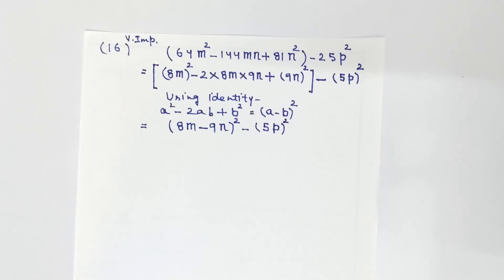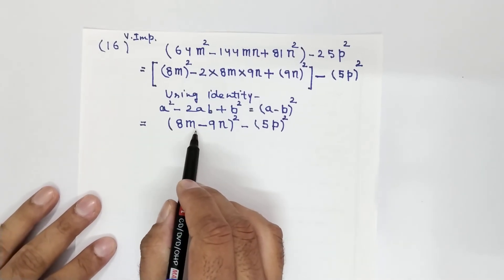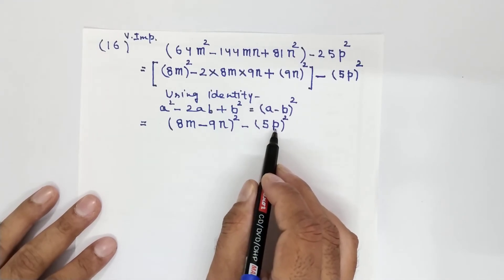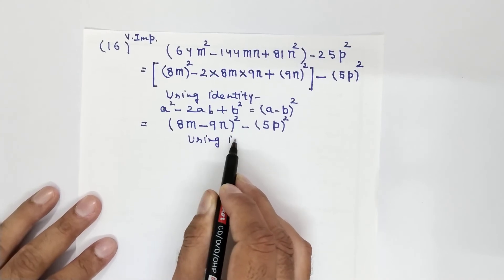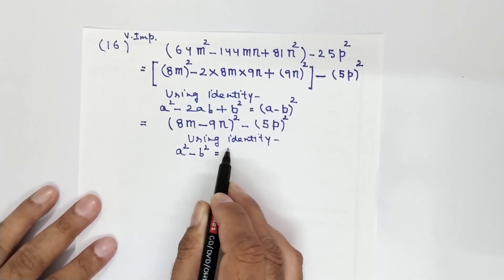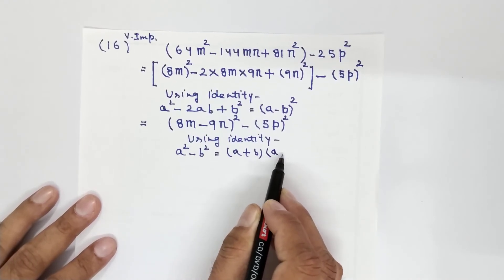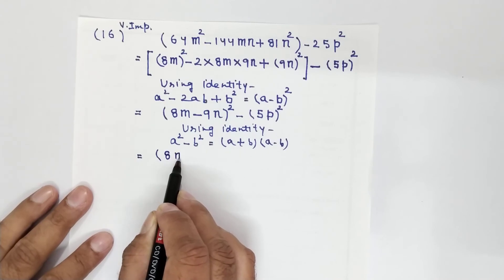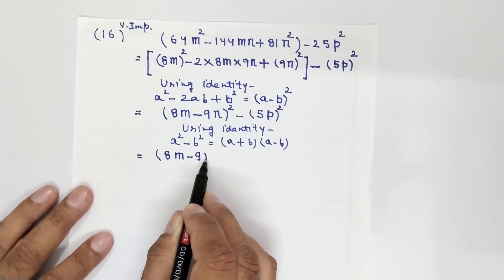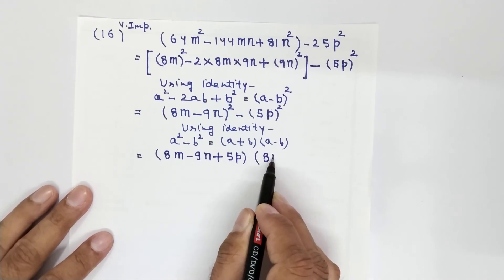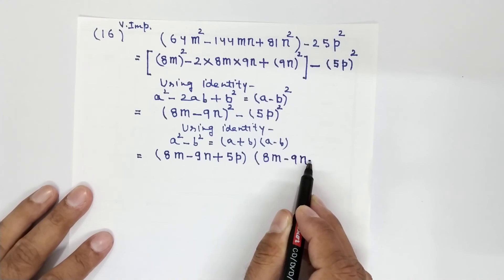Now, which identity applies here? As I said at the beginning of the question, a double identity will be used — one identity is already applied. Now the identity A² minus B² applies, where A is (8m minus 9n) and B is 5p. Using identity: A² minus B² equals (A plus B) into (A minus B). It equals (8m minus 9n plus 5p) into (8m minus 9n minus 5p).